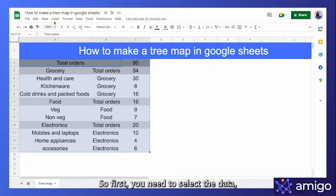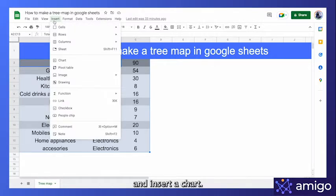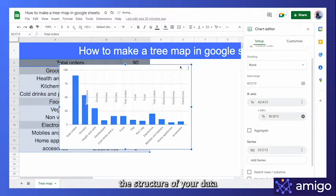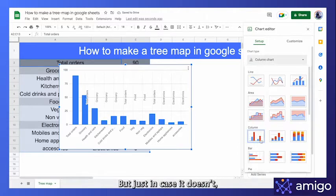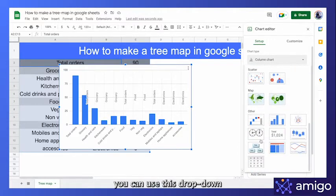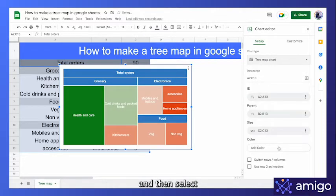So first, you need to select the data and insert a chart. Now, sometimes Google Sheets understands the structure of your data and automatically presents you with a tree map chart. But just in case it doesn't, you can use this drop down menu and scroll until you find the tree map chart and then select it.